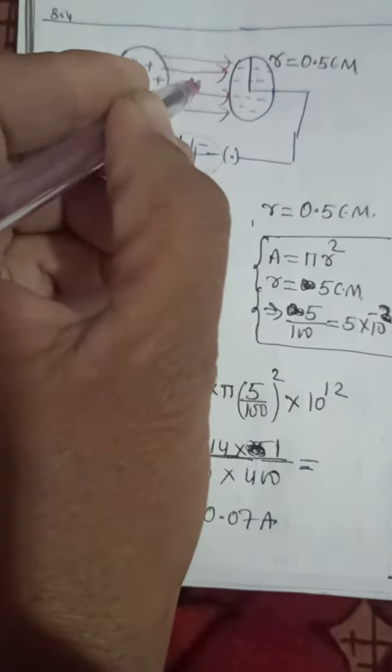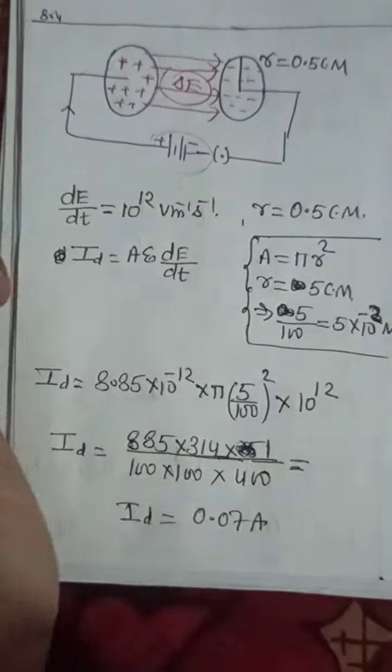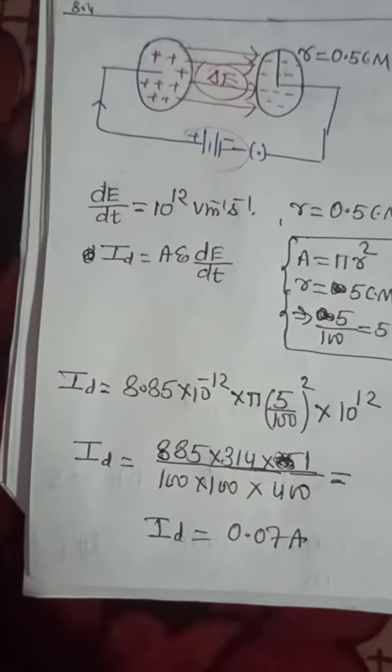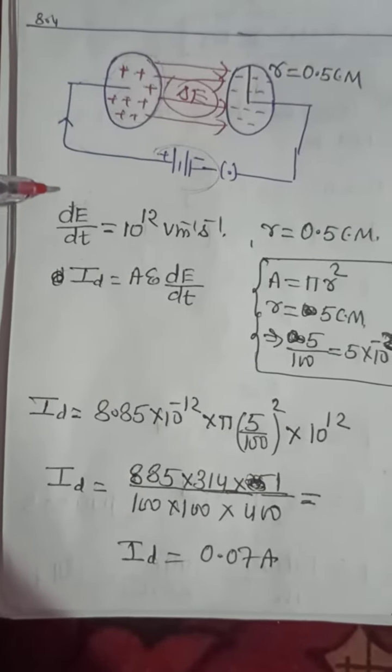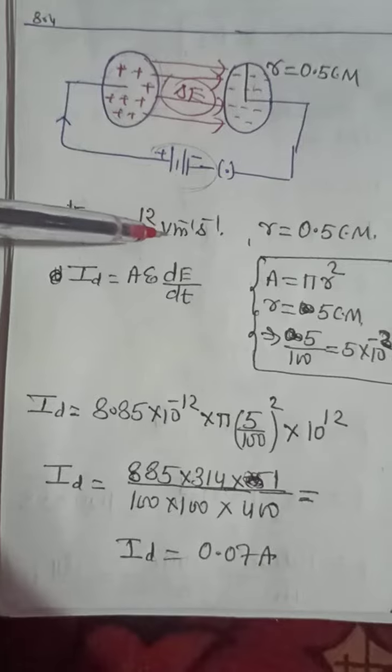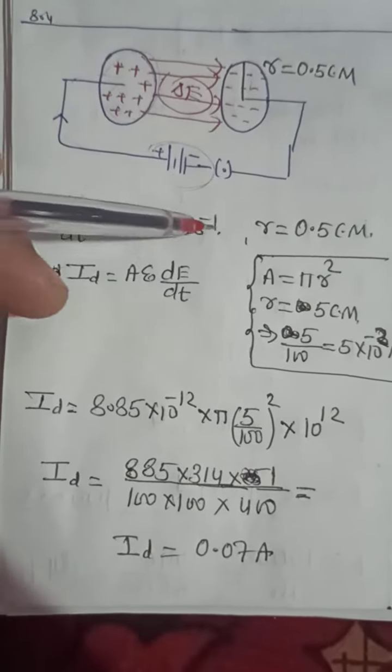So there is change with respect to time. Change in the electric field, it is given that with respect to time, 10 to the power 12 volt meter per second.